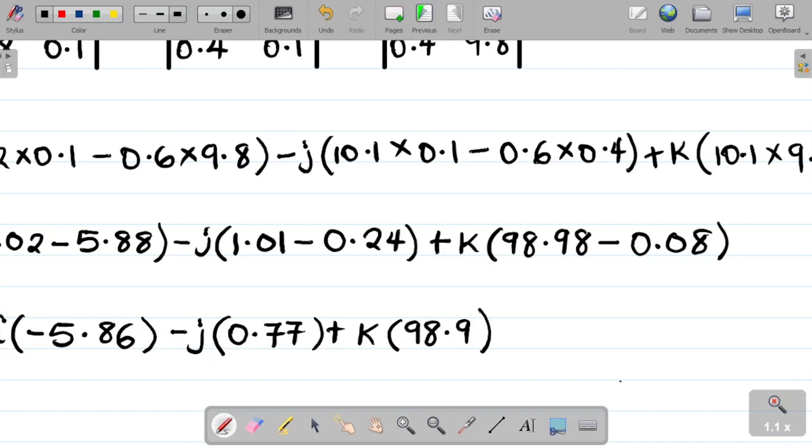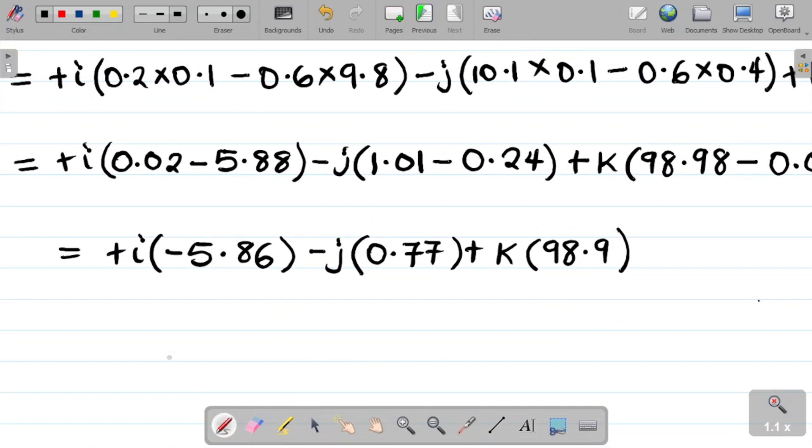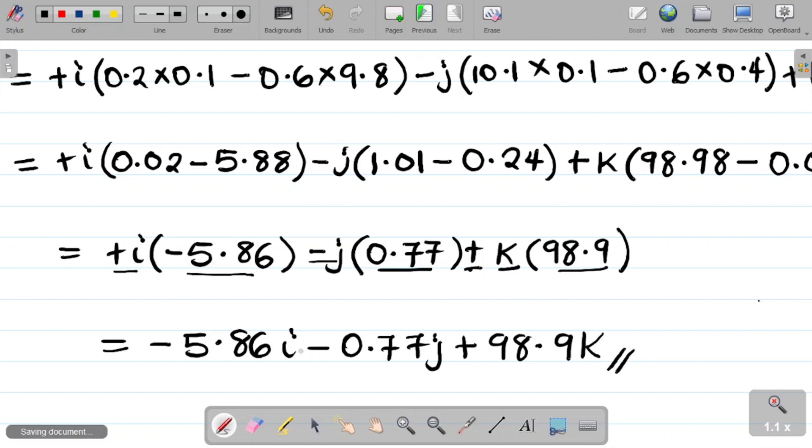My next task obviously will be to get this value. That's equal to I have plus i, 0.02 minus minus 5.88 that gives you minus 5.86. Minus j into 1.01 minus 0.24, that's about 0.77, so 0.77. Plus k into 98.98, 98.98 minus 0.08 minus, and that's about 98.9.